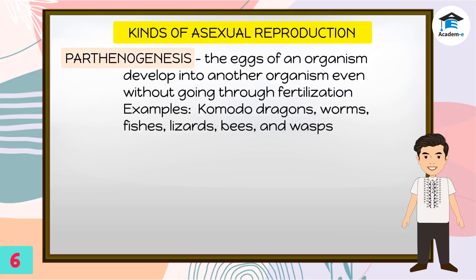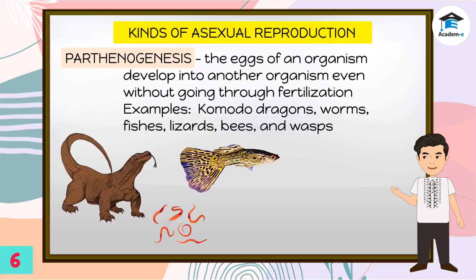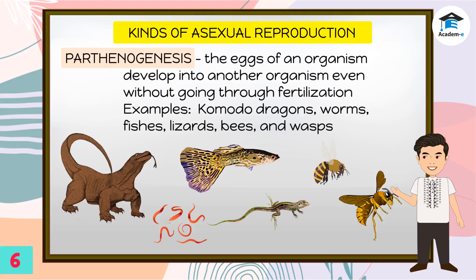Parthenogenesis is a kind of reproduction wherein the eggs of an organism develop into another organism even without going through fertilization. This is common among Komodo dragons, worms, fishes, lizards, and some insects like bees and wasps.